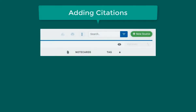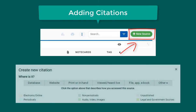Once you have created a project, select new source at the top right to enter a new citation. Noodle Tools will guide you through entering the citation information. First, it asks you where you found the source that you are citing.